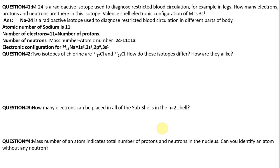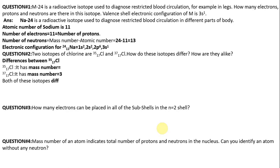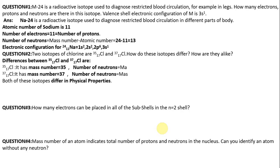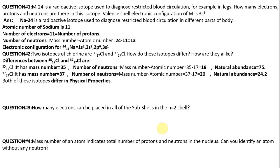The next question: two isotopes of chlorine are Chlorine-35 and Chlorine-37. How do these isotopes differ and how are they alike? First, we will discuss differences. Chlorine-35 has mass number 35, and the number of neutrons is mass number minus atomic number: 35 minus 17 equals 18 neutrons for Chlorine-35. Natural abundance is different.